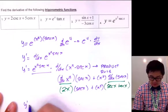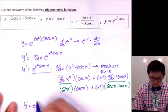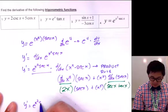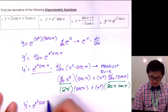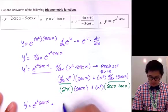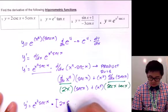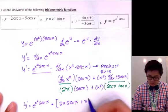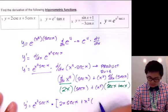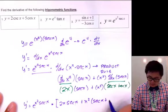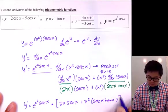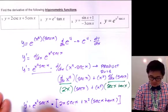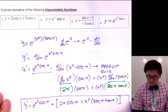Now we can write the full y prime as e to the x squared secant x, multiplied by the quantity 2x secant x plus x squared secant x tangent x. This is the derivative of the last problem, using the derivative rule for e to the u combined with the product rule.